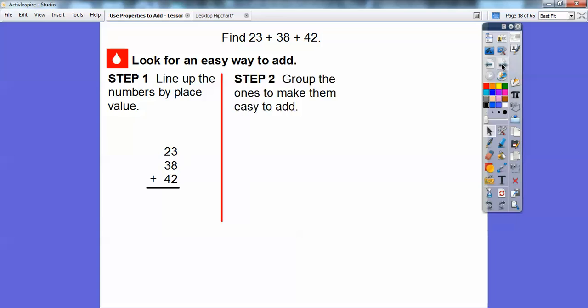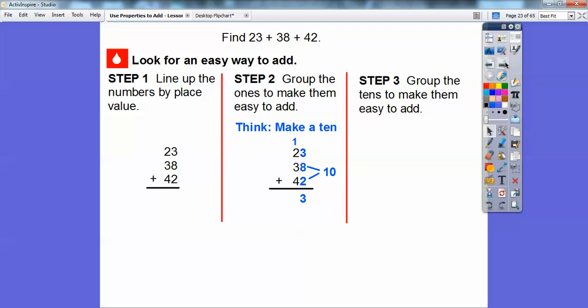Step 2, let's group the ones to make them easy to add. Here's all the ones: 3, 8, and 2. Let's try and make a 10. 8 plus 2 makes 10 right there. If we add 8 plus 2, which is 10, and then 10 plus 3, this is a nice friendly number. 10 plus 3 is 13. We'll put the 3 down for the 13 and carry the 1 up in the 10 spot.